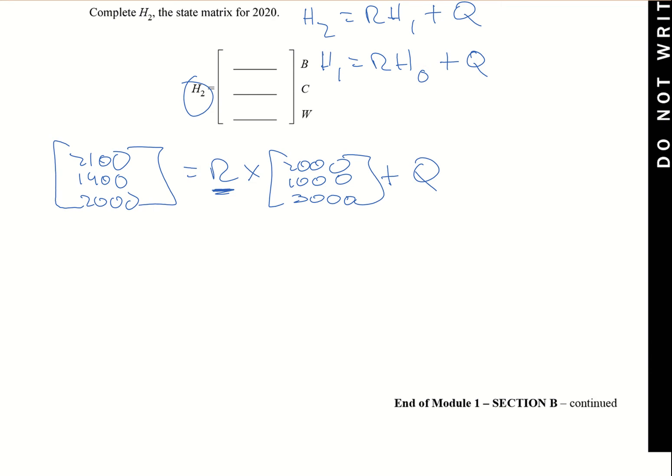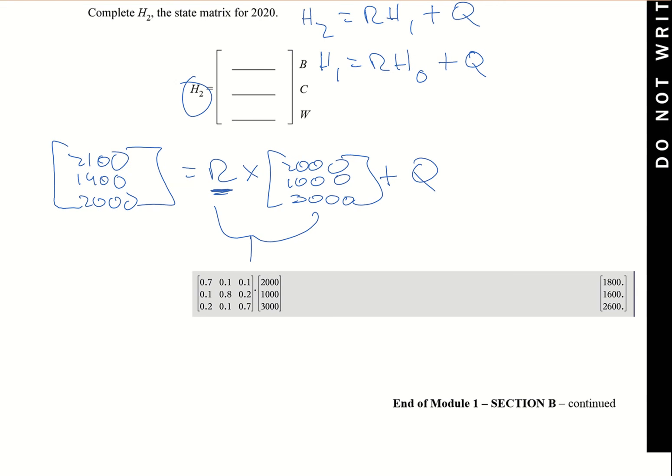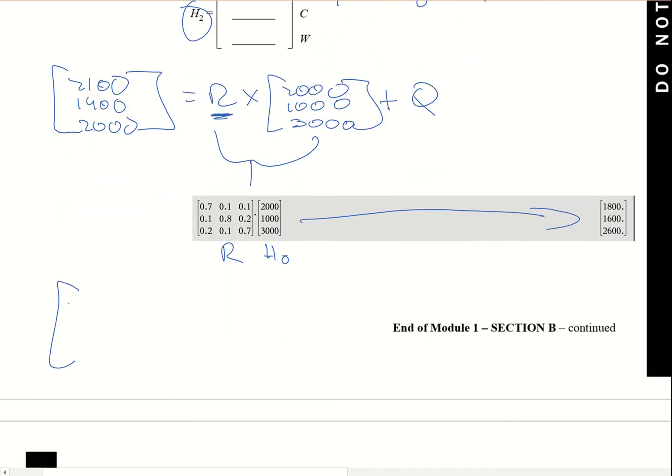Now what we need to do is calculate this value, and then we can work out q. So what I've added here is what you can put in your calculator - this is your r value and this is your h0. When you do that you'll get this result: 1800, 1600, 2600. So what that means is 2100, 1900, and 2000 equals 1800, 1600, 2600 plus q.